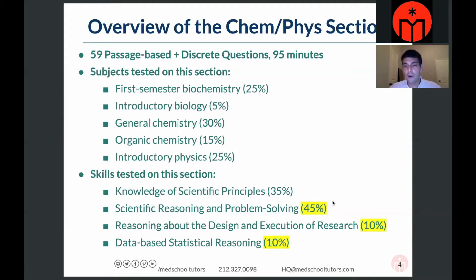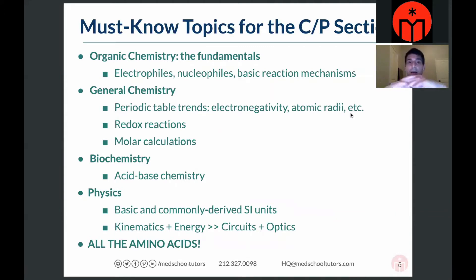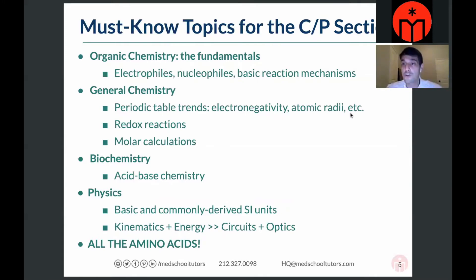That's a general overview. The Chem-Phys section covers probably half of your content review book set — chemistry, organic chemistry, gen chem, biochem, physics. That's a huge amount of knowledge, and I'd recommend going through all of it. But I want to highlight some must-know topics, because if you focus on anything, it should be these things — they'll let you answer and reason through the largest number of questions.